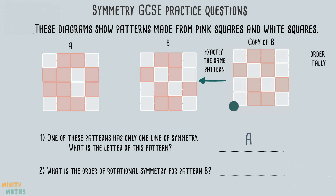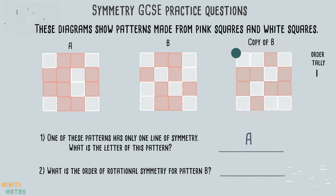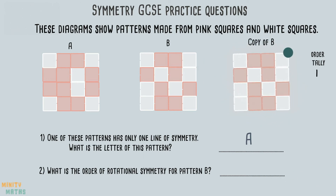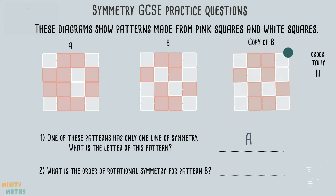Let's keep a tally. When turning the pattern another 90 degrees, the pattern does not match. Now we have turned the pattern a full 360 degree turn, as the marker is now back at the starting point. We can see this matches the original, so we can mark this down on the tally. This pattern matches the original at two points when it is turned 360 degrees. Therefore, the order of rotational symmetry is 2.